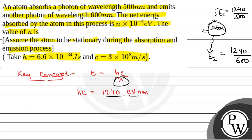So energy absorbed by atom, that will be equal to E2 minus E1, sorry E1 minus E2. Energy incident on atom minus energy emitted by atom. So that will be equal to 1240 by 500 minus 1240 by 600.